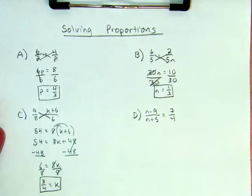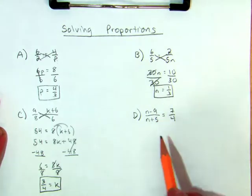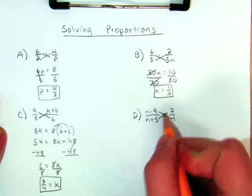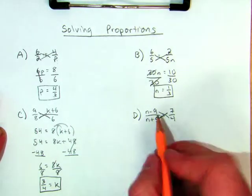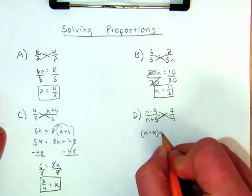Last but not least, N minus 9 over N plus 5. Does anything change here? Nope. I simply cross multiply again. You've got two binomials, but nothing changes. N minus 9 times 4 equals N plus 5 times 7.